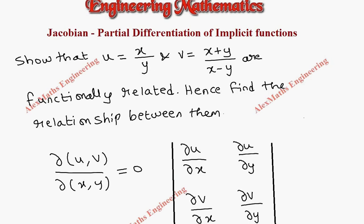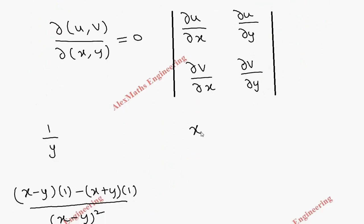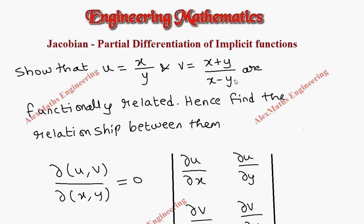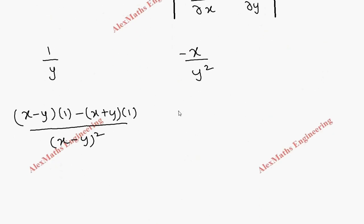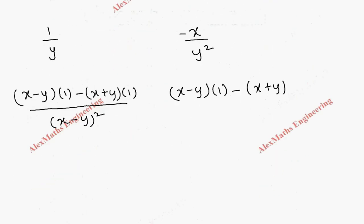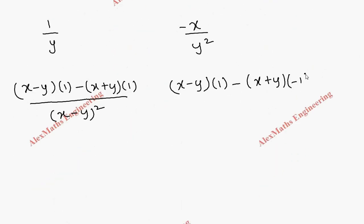Coming to the partial derivative with respect to y: x is constant, and the derivative of 1/y is −1/y², so it is −x/y². Then for the partial derivative of v with respect to y, following the quotient rule: (x−y) times differentiation of the numerator (which is 1), minus (x+y) times differentiation of the denominator (which is −1 because it is with respect to y), all divided by (x−y) whole square.